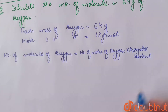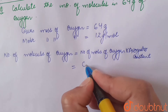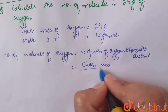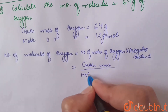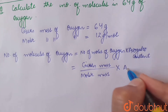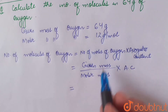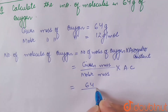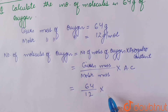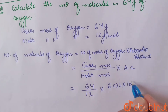The number of moles equals given mass upon molar mass, multiplied by Avogadro's constant. That equals given mass 64 grams divided by molar mass 16 grams per mole, multiplied by Avogadro's constant 6.022 × 10²³.